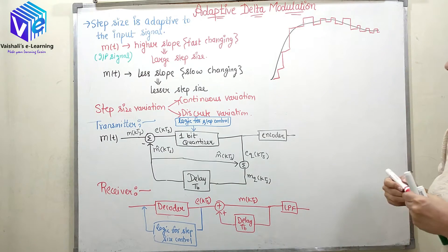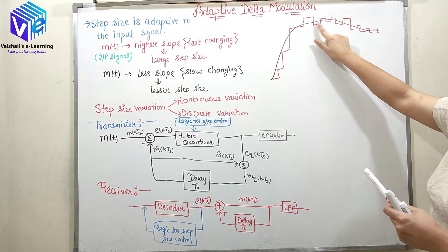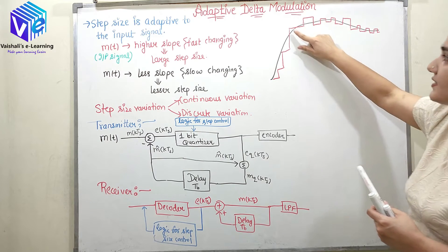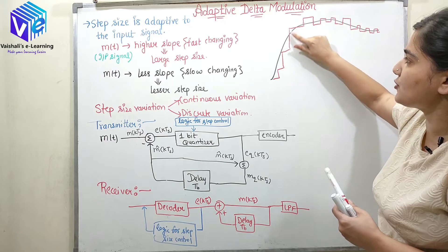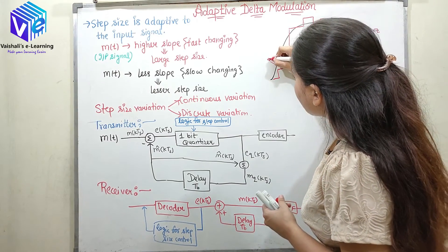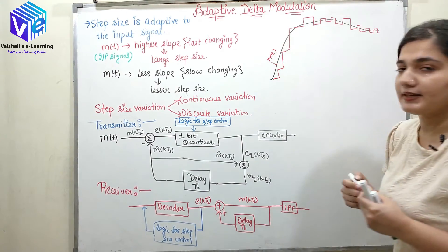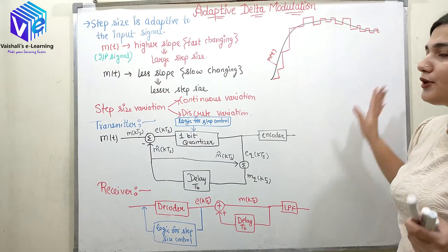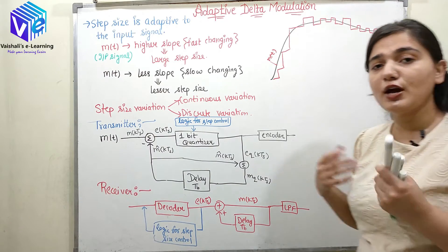When we have less slope — here we had less slope, so the step size decreased. Here we had more slope; the message was changing very steeply. I hope you understood how all these things are happening.